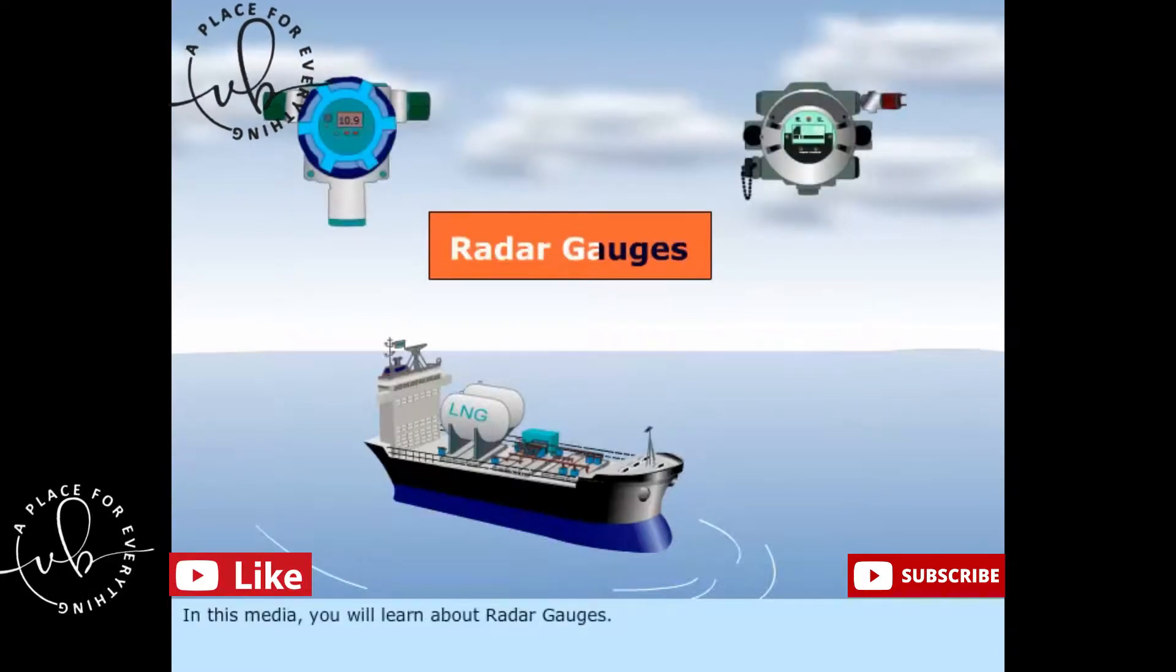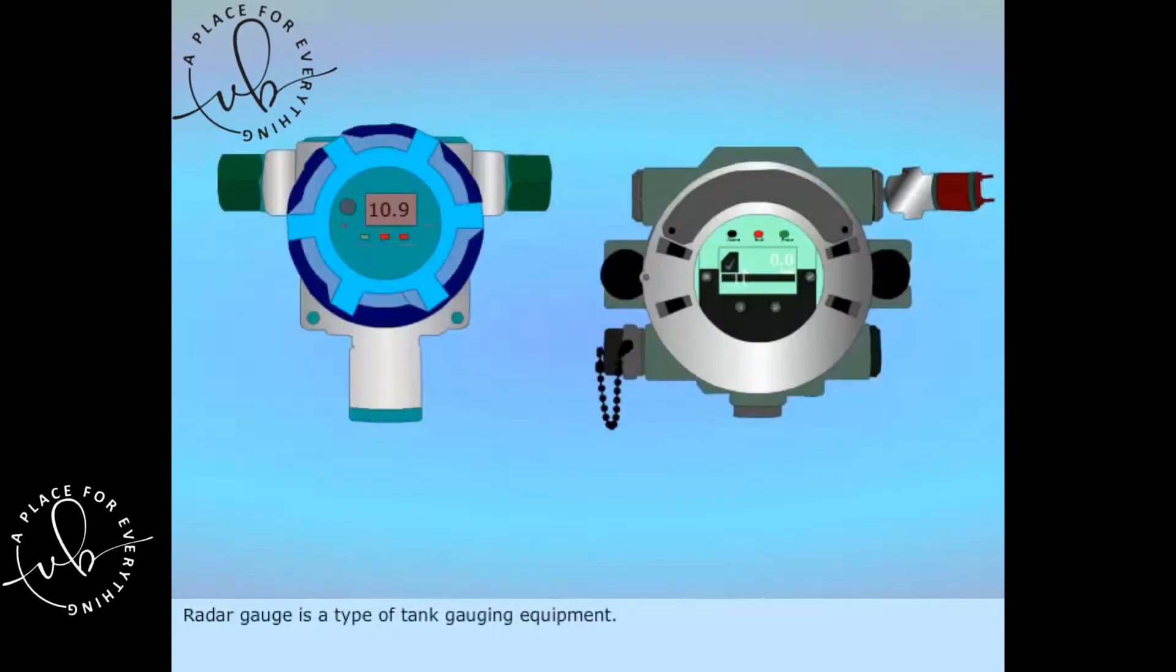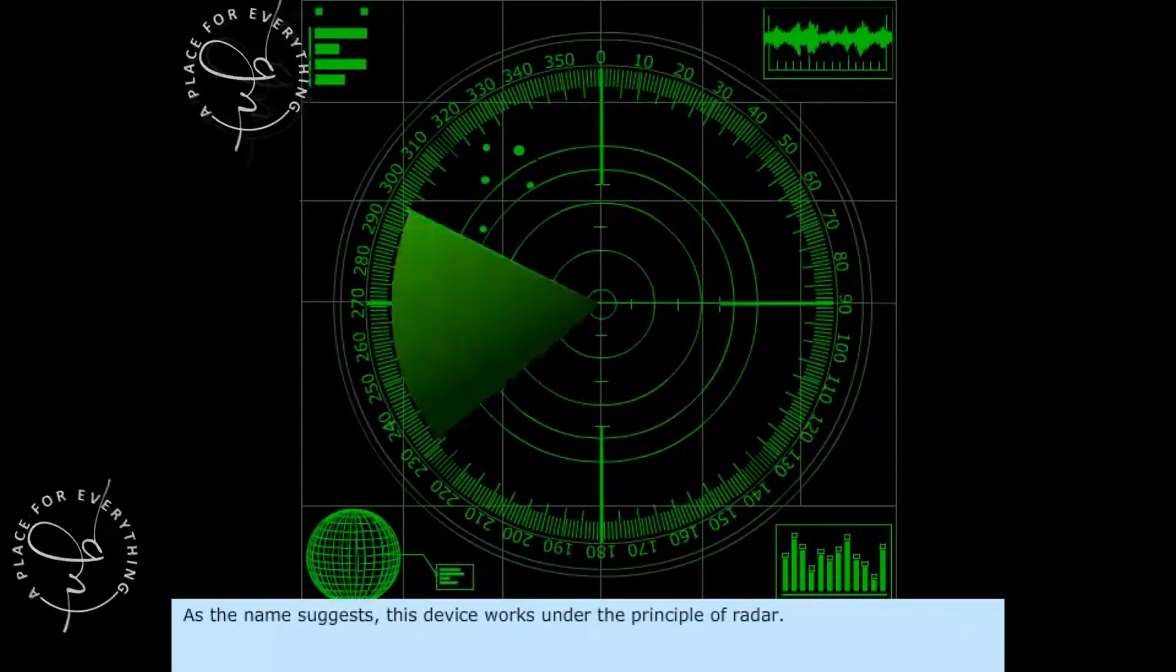In this media, you will learn about radar gauges. Radar gauge is a type of tank gauging equipment. As the name suggests, this device works under the principle of radar.